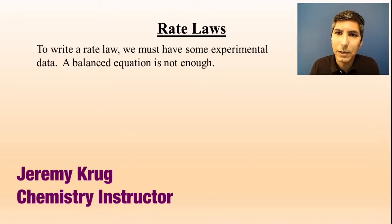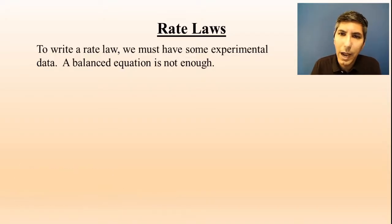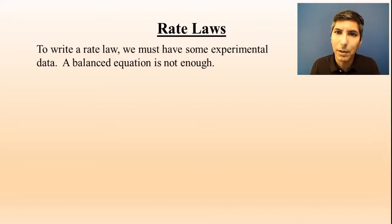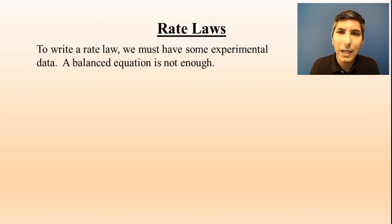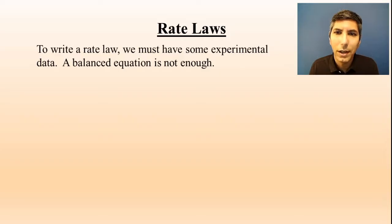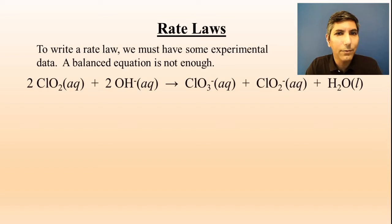A rate law is a special equation that helps us understand how the rate of a specific chemical reaction is going to take place. In order to write a rate law, we have to have some experimental data. We can't just look at a balanced equation and use that to write a rate law — that's not enough. We have to have a set of data.